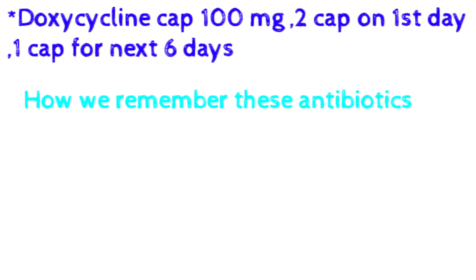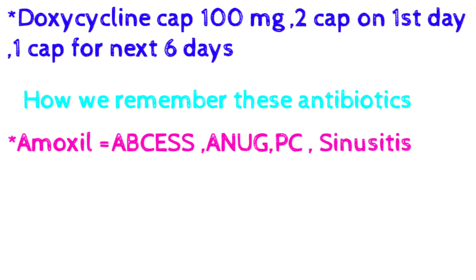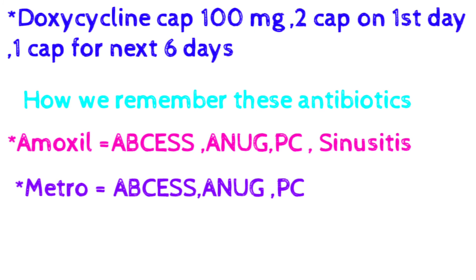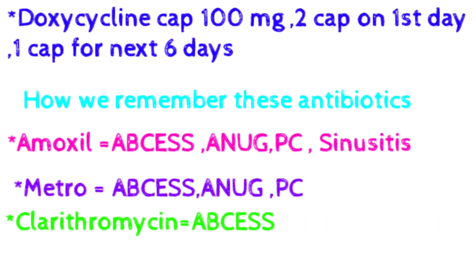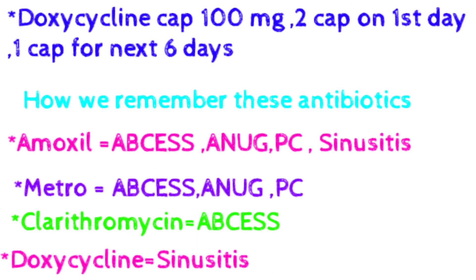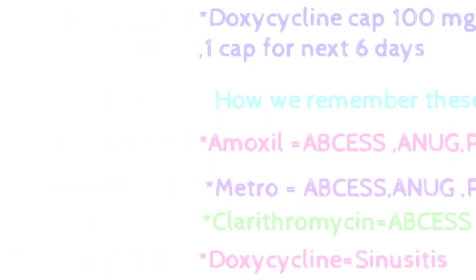Now, how do we remember which antibiotic to give in which condition? Amoxil is given in all four conditions: abscess, acute necrotizing ulcerative gingivitis, pericuronitis, and sinusitis. Metronidazole is given in abscess, acute necrotizing ulcerative gingivitis, and pericuronitis — but not in sinusitis. Clarithromycin is given in abscess. Doxycycline is given in sinusitis.